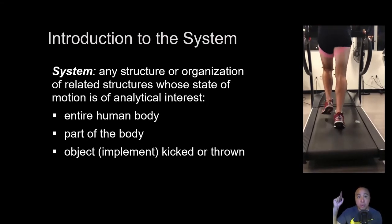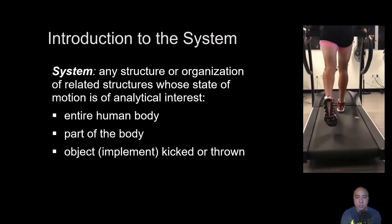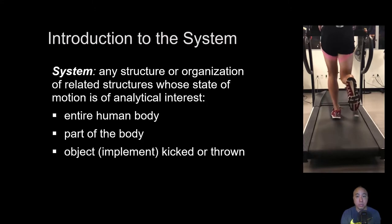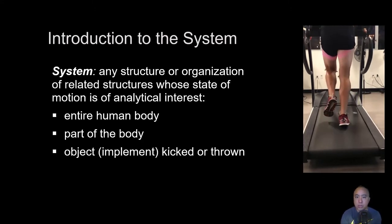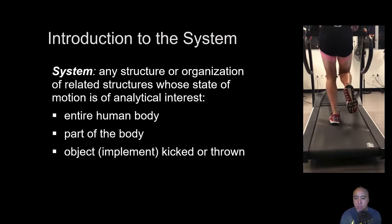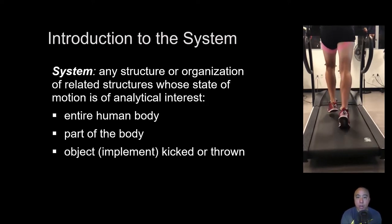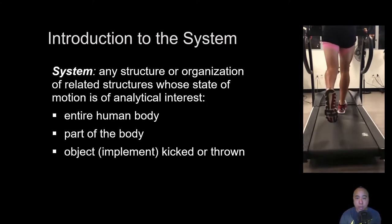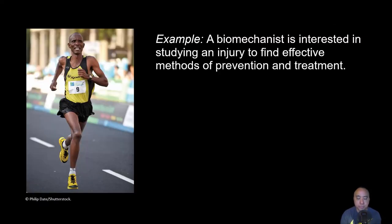Let's take for example a runner who comes in for a biomechanical analysis in order to improve his running performance or lower his risk of injury. The system could be his pelvis, it could be his center of mass — which is essentially an indicator of whole-body mechanics — or it could be a part of his body such as the foot and ankle, the tibia, or the knee. Whatever part of the body we're trying to analyze is known as a system.